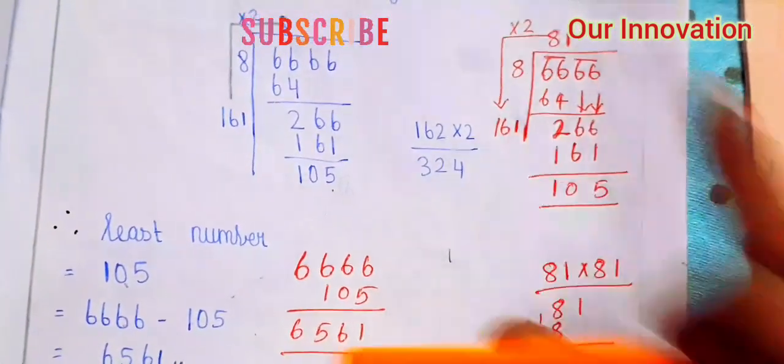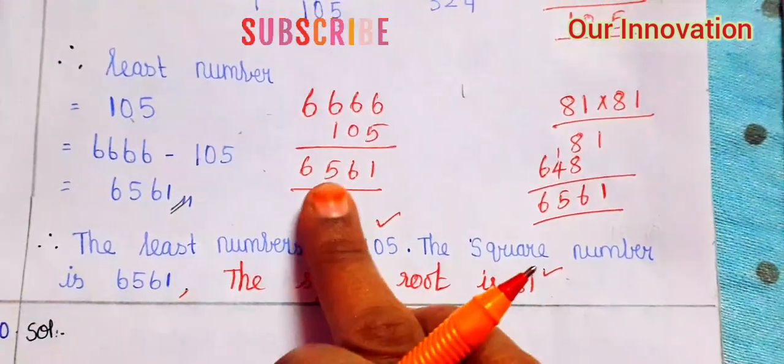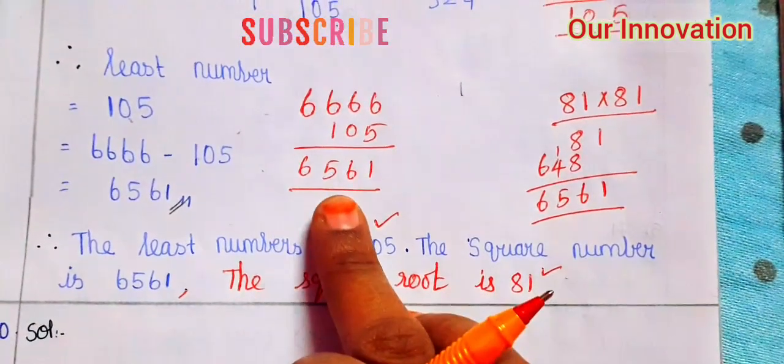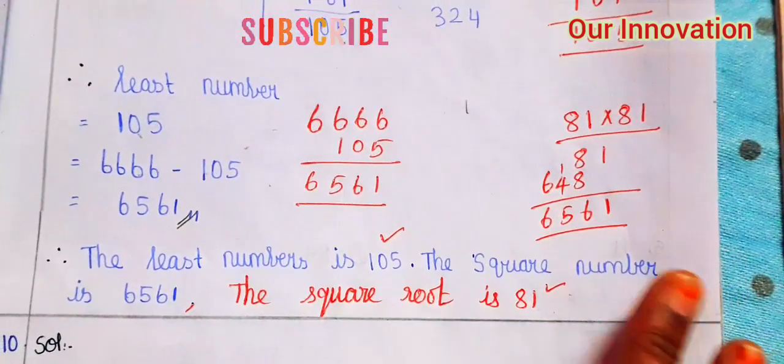You can verify: 81 multiplied by 81 gives 6561. This is your answer.